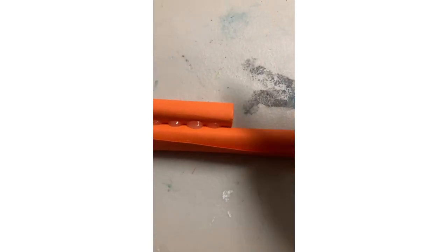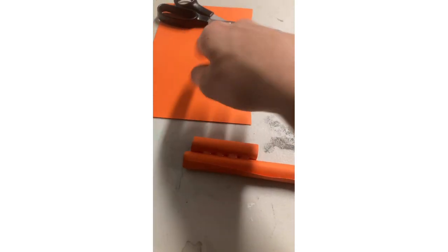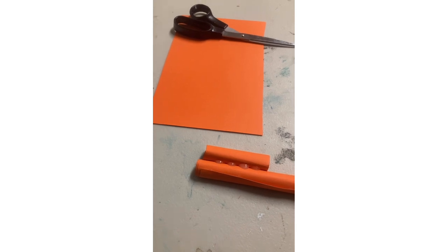Now, the last part is to use this rubber band and roll up the other half of the paper, the second paper. So let's get into it.